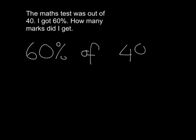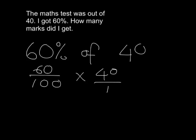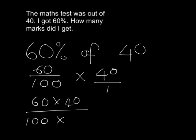Because 60% we know is just 60 over 100. And if you remember back to what we did in fractions, it's of 40, and we can just write that as 40 over 1. So we're multiplying fractions — multiply the numerators and multiply the denominators. At this point we can just go ahead and multiply out.